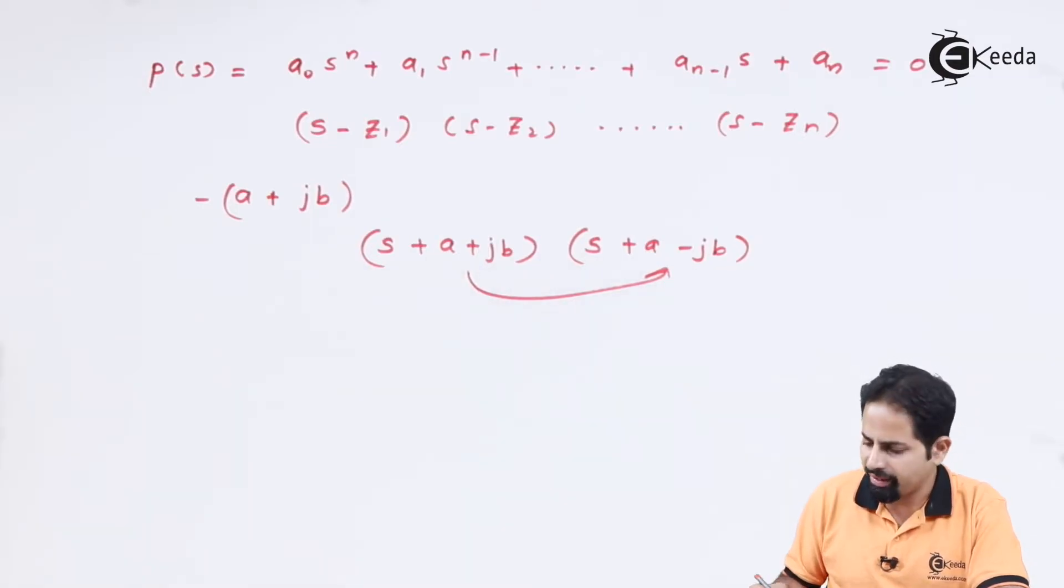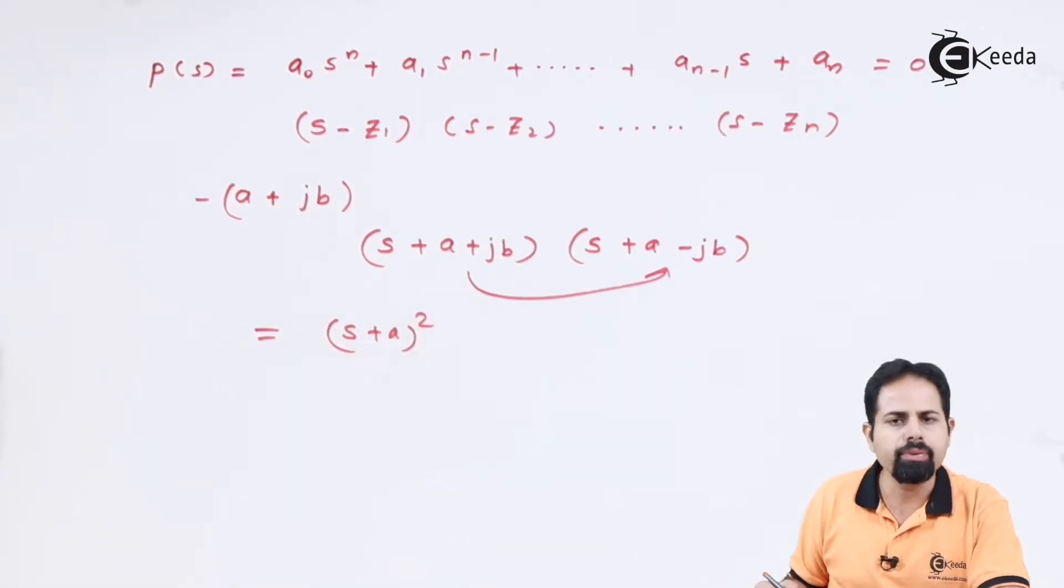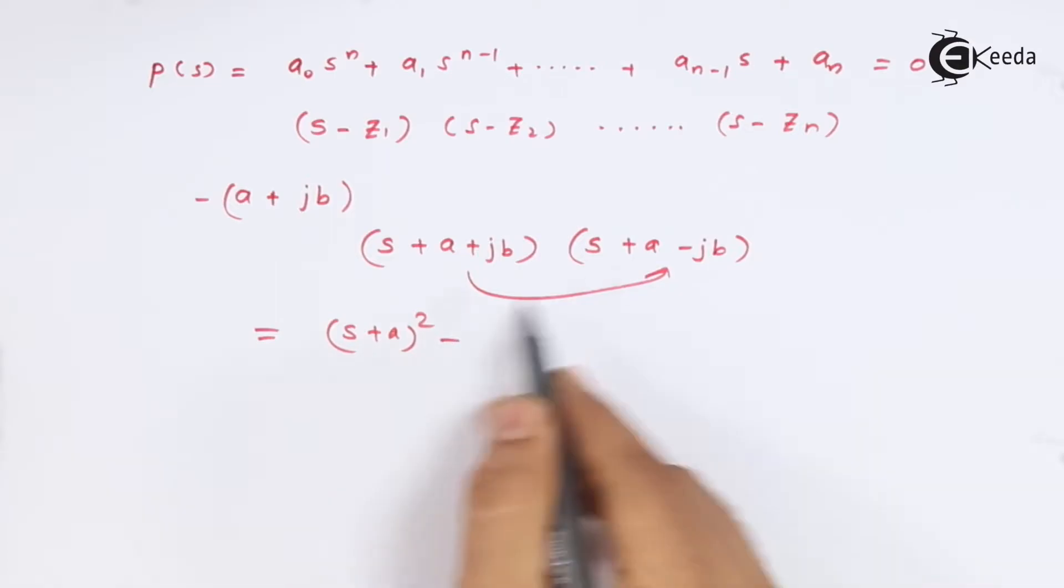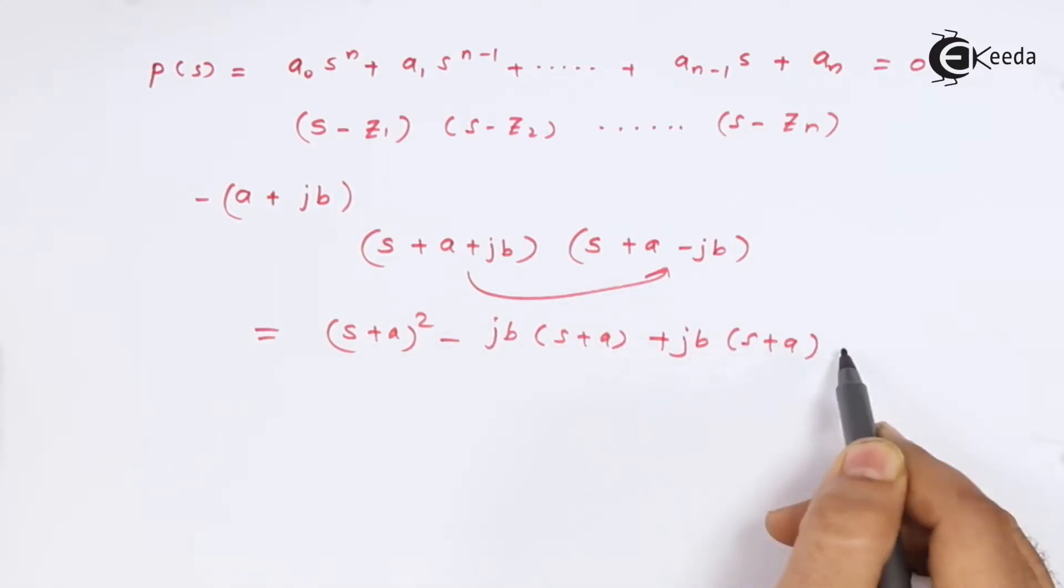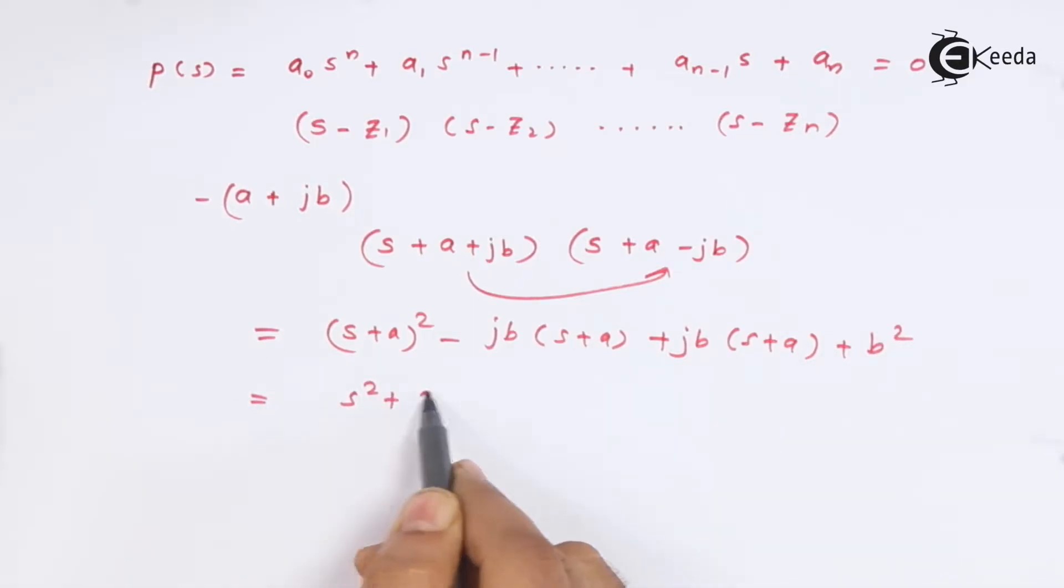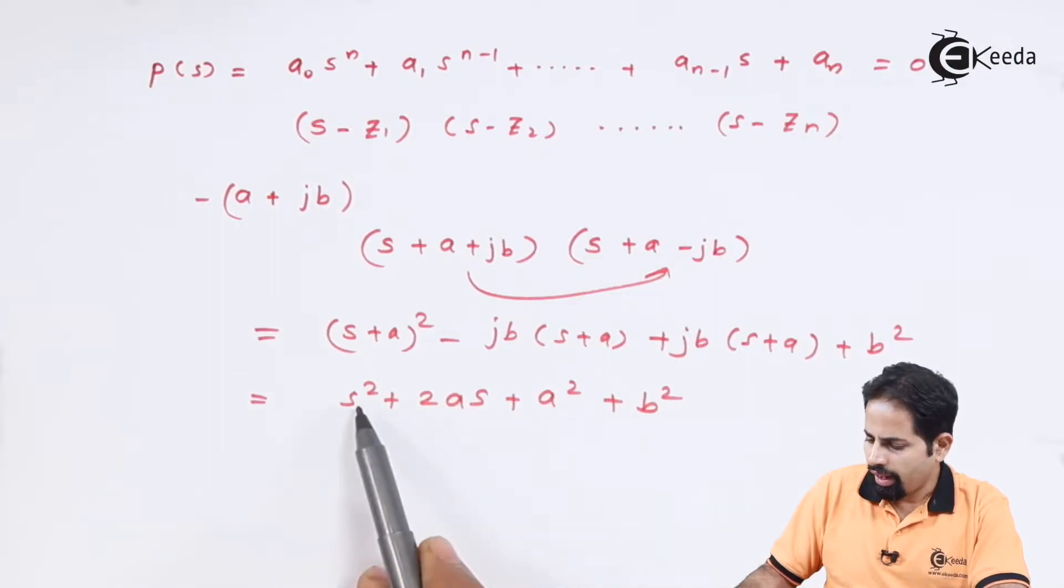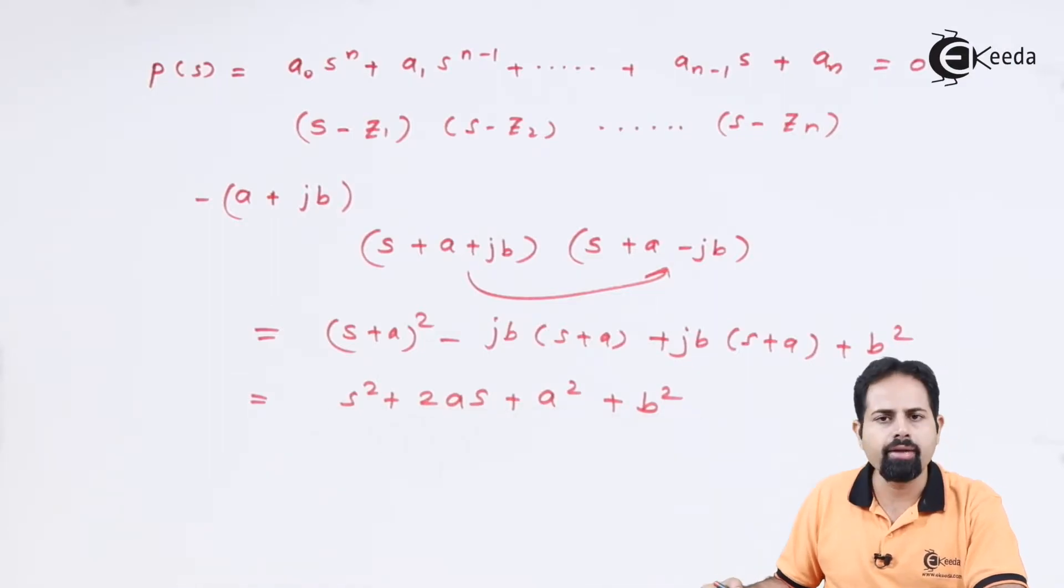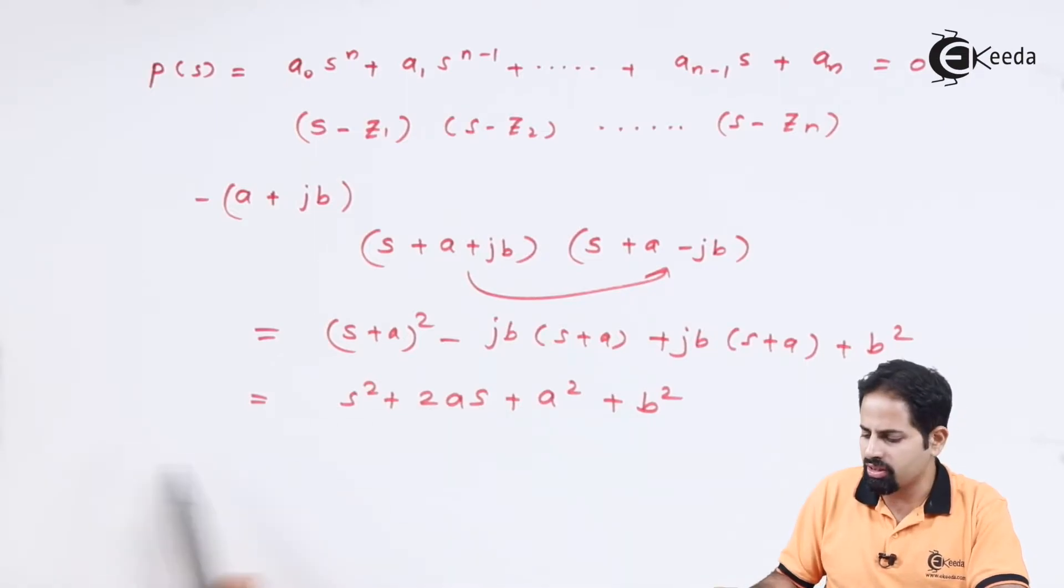Suppose we multiply both the brackets. What we are going to get is S plus A the whole square. So this is what we get. S square plus two S plus A square and B square. A and B are always positive, real and positive. And this two also is positive. So this is a real polynomial.